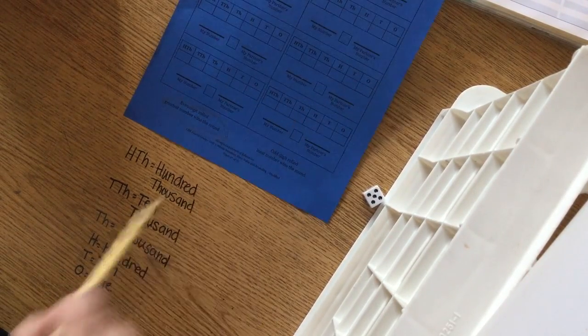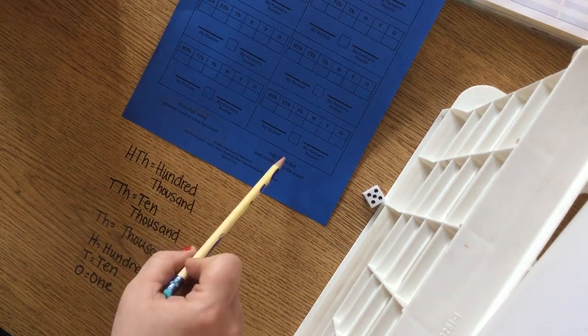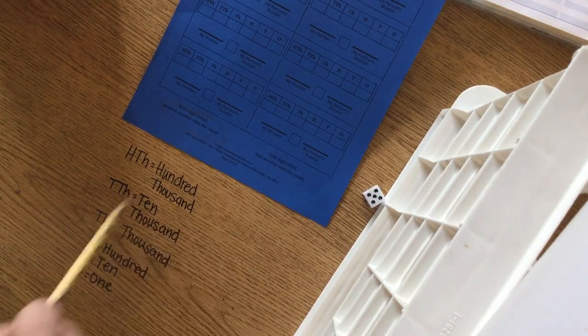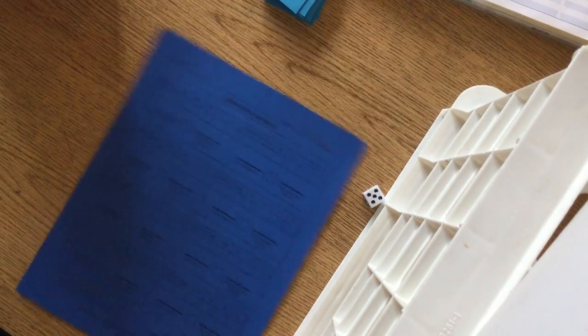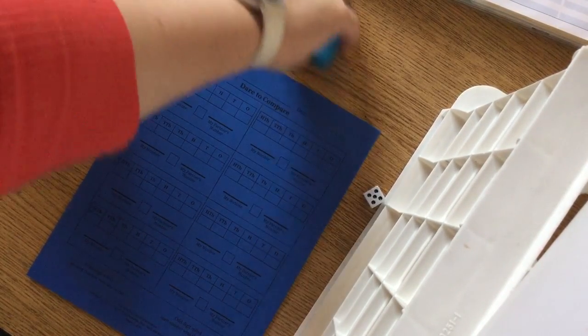The TH stands for 1,000. The H stands for 100. The T stands for 10, and the O stands for 1. So if you want to take a second and write those down, you can. If you think you'll remember it, you don't need to.